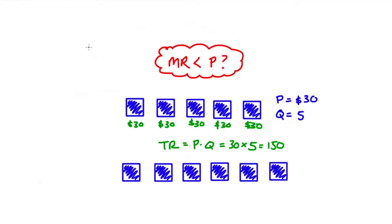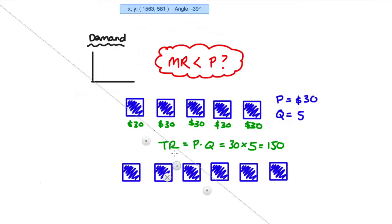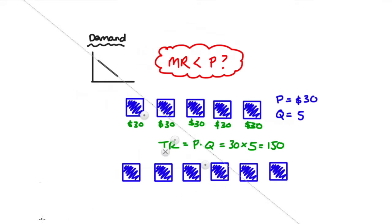We should just digress a little bit to talk about demand here. What do we know about demand? Well, we know that it's downward sloping. The law of demand tells us that price and quantity demanded move in opposite directions — that if we increase our price, we have to bear the fact that the market is going to demand less of it.